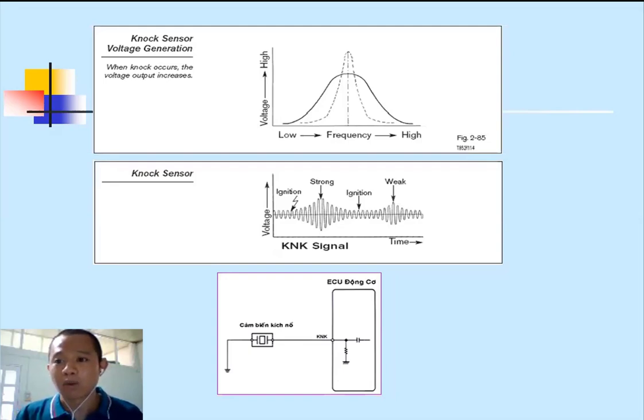The ECU doesn't directly know when knock occurs. It only recognizes when the voltage from the knock sensor reaches 2.5V. At that point, the control system knows knock is occurring and retards the ignition timing to stop the knock condition.